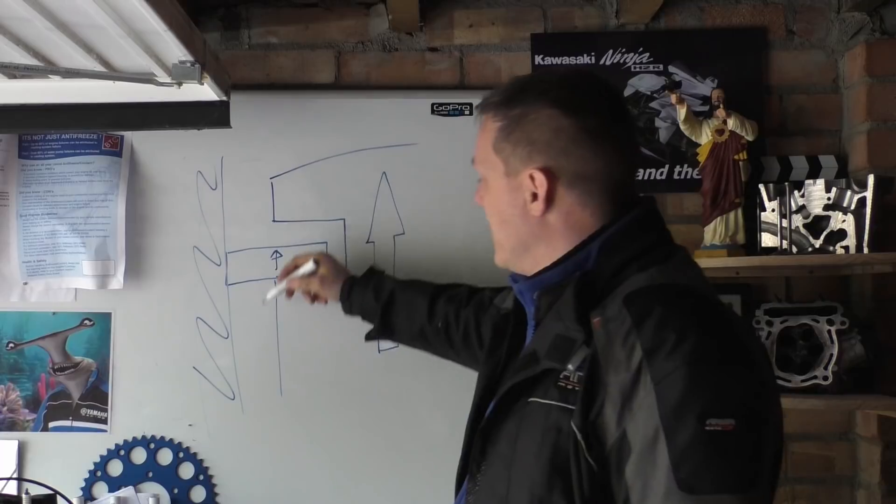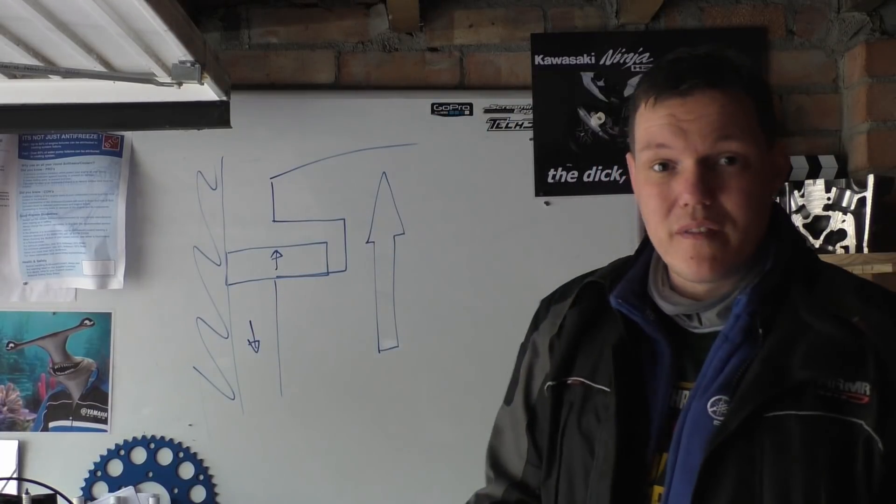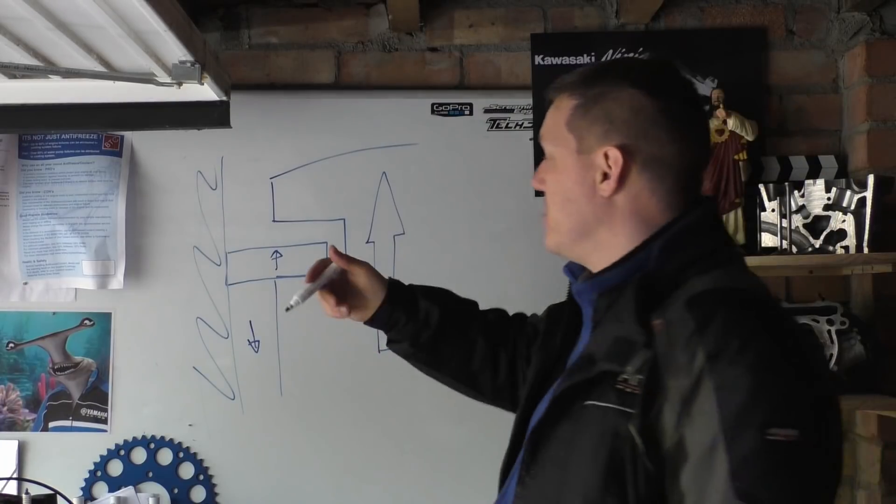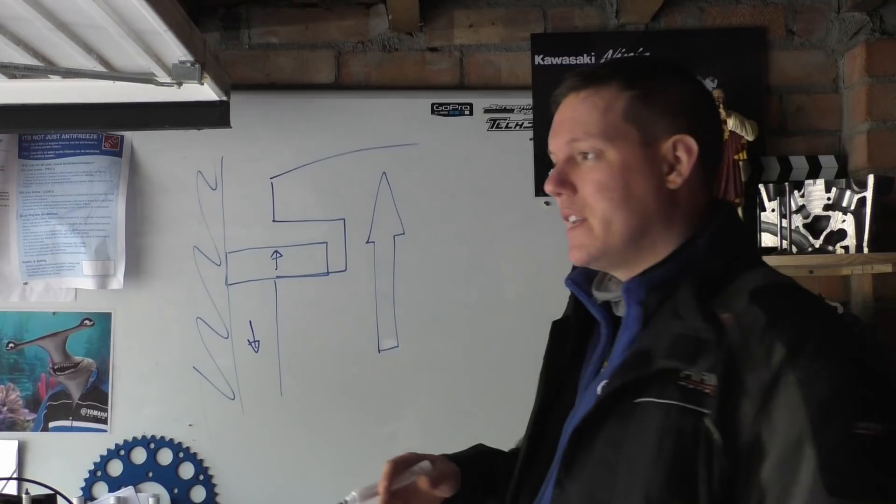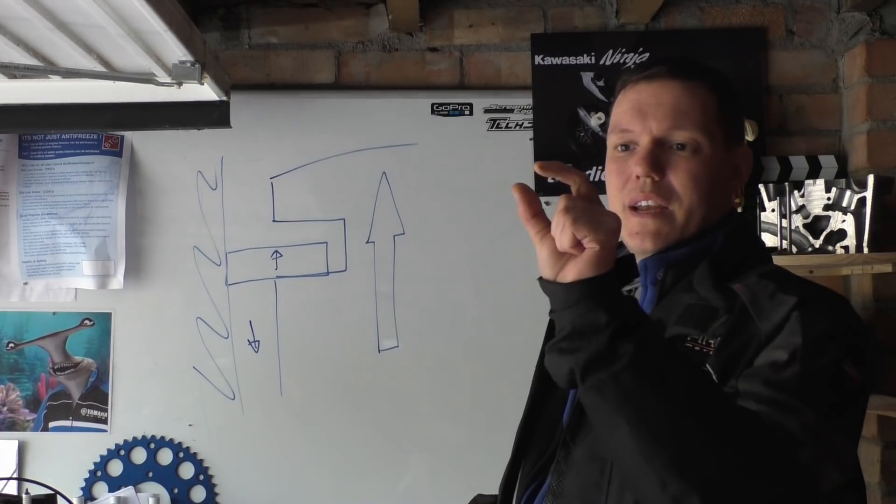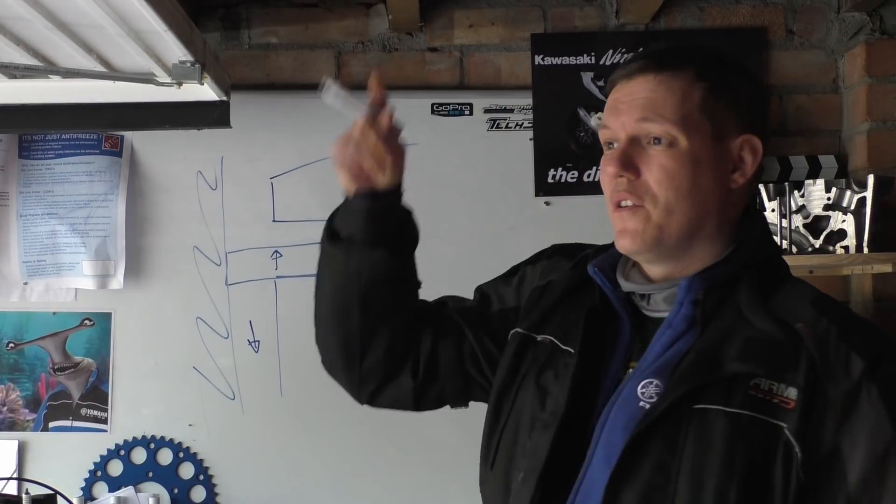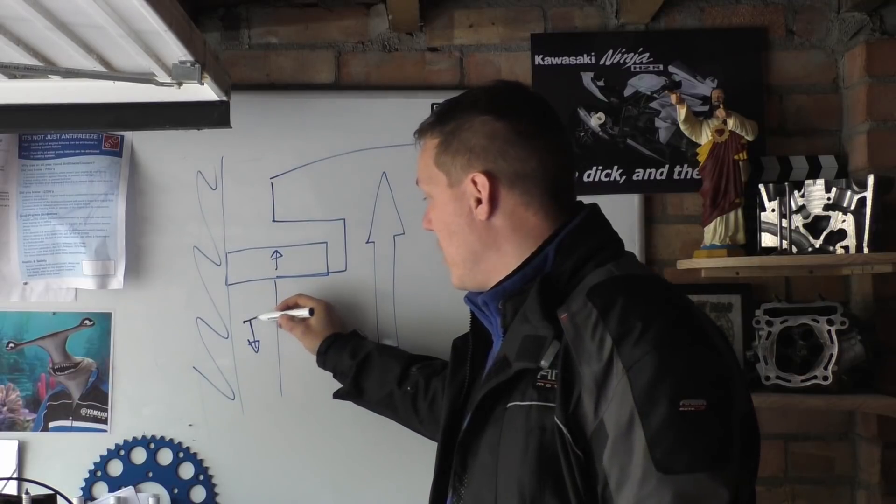Now, what's happening here is your crankcase pressure is going slightly below atmospheric because you're basically creating a bigger volume, especially at high speed, even if you have crankcase breathers. Your piston has a diameter of whatever, your crankcase breather has a smaller diameter, you cannot flow the air through there quick enough to completely recover. So this is below atmospheric.